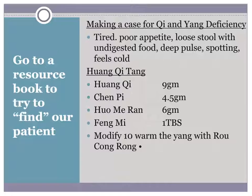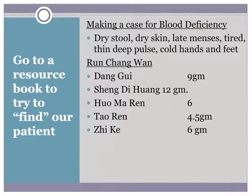We could make a case for qi and yang deficiency: she's tired, has a poor appetite, sometimes has loose stool with undigested food, a deep weak pulse, spotting, and feels cold — we could make a good case for qi and yang deficiency, in which case the book recommends Huang Qi Tang. Or let's make a case for blood deficiency: she has dry stool, dry skin, late menses, tiredness, a thin deep pulse, cold hands and feet — we could make a case for blood deficiency, in which case the book recommends Run Chang Wan.